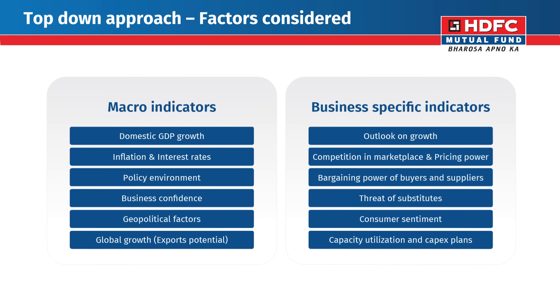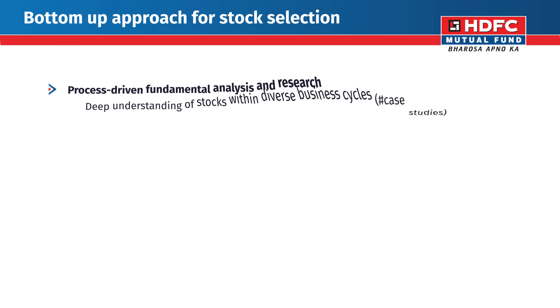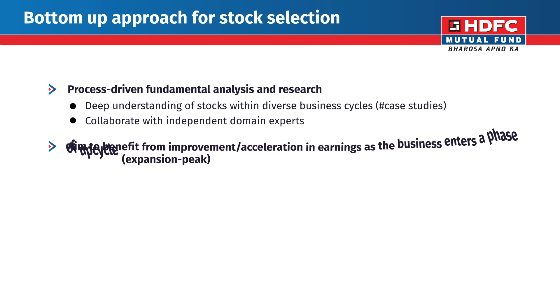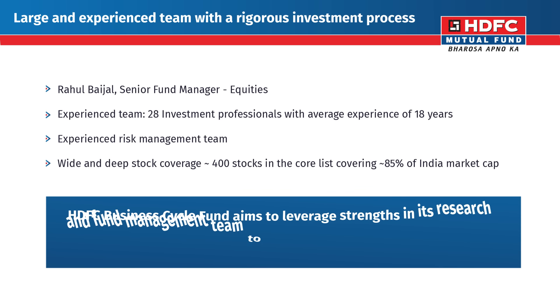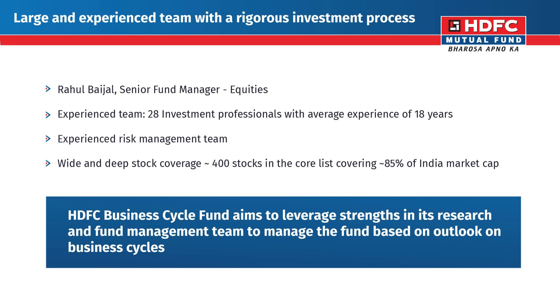The top-down approach in the HDFC Business Cycle Fund covers both macro-indicators and business-specific indicators such as the ones shown here. The fund also employs a bottom-up approach for stock selection, and aims to leverage the strengths of its research and fund management team to manage the fund based on the outlook of business cycles.